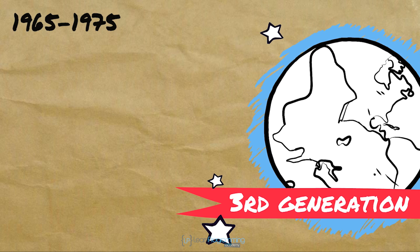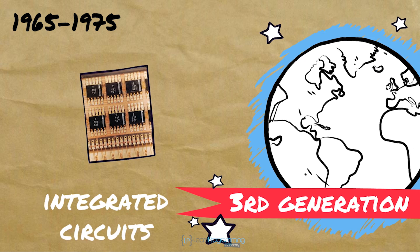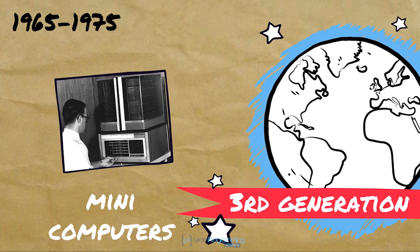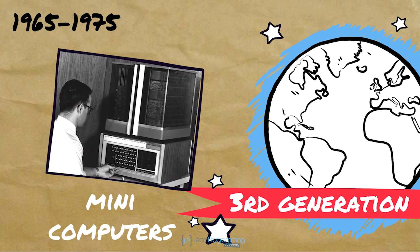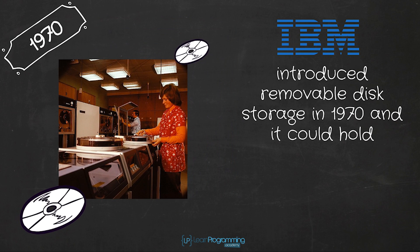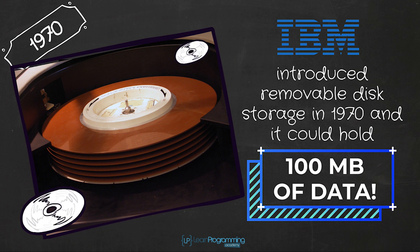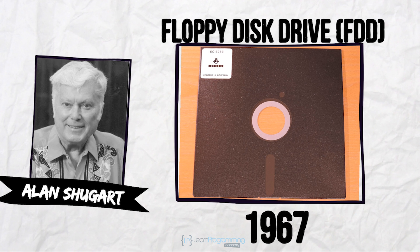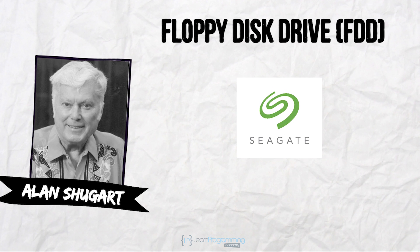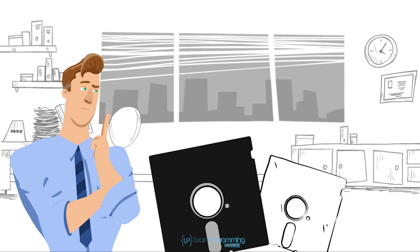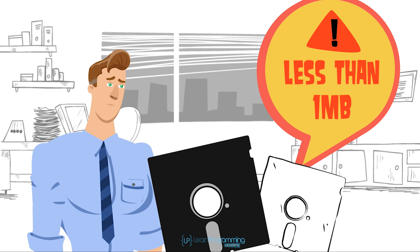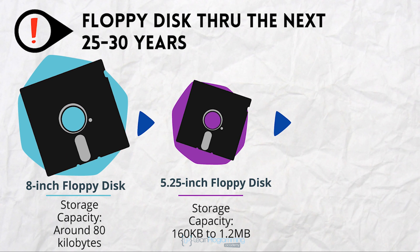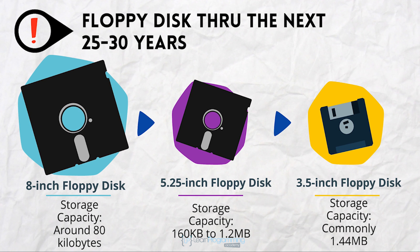The third generation emerged from 1965 through 1975 and was identified by using integrated circuits, or ICs, rather than transistors and magnetic cores. These computers became known as minicomputers because their physical size shrunk to about the size of a desk. IBM introduced removable disk storage in 1970 that could hold 100 megabytes. The floppy disk drive was invented at IBM by Alan Shugart in 1967, using an eight-inch floppy. Shugart went on to eventually form Seagate Technologies. Over the next 25 to 30 years, the floppy disk shrank to 5.25-inch and then to a hard-cased 3.5-inch disk capable of storing several million bits of data.